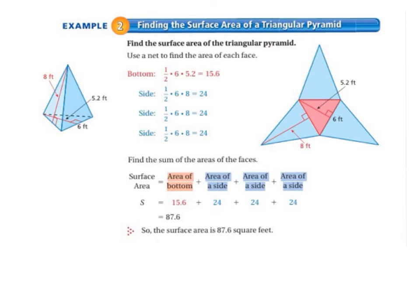Moving on to example 2, we're going to find the surface area of a triangular pyramid. So once again, we're using that formula: area of a triangle equals 1 half base times height. And we're using a net, so we draw a triangle in the middle and then 3 triangles off to the sides. And our triangle in the middle is 6 feet by 5.2 feet.